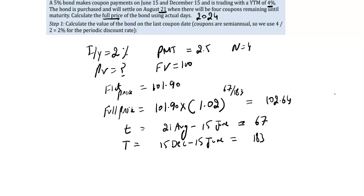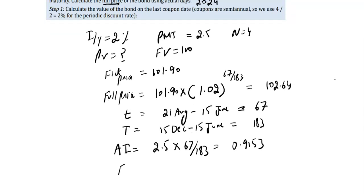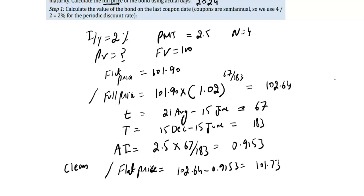Now let's calculate the accrued interest. Accrued interest = 2.5 (the semi-annual coupon) × (67/183) = 0.9153. So the flat price = full price minus accrued interest = 102.64 − 0.9153 = 101.73. Note: flat price is also called the clean price or the quoted price, while full price is also called the dirty price.